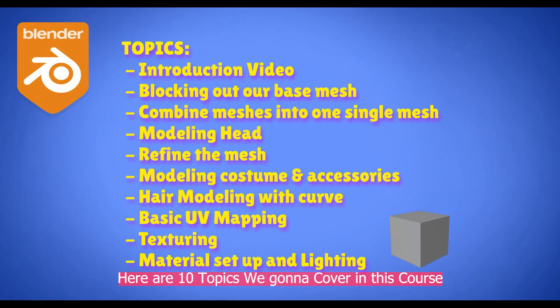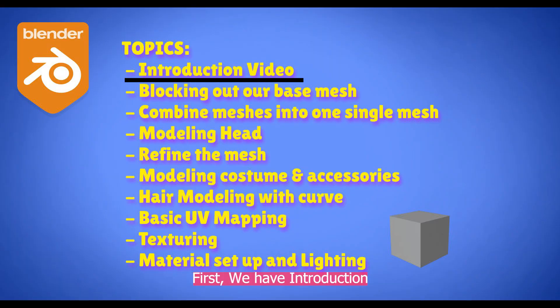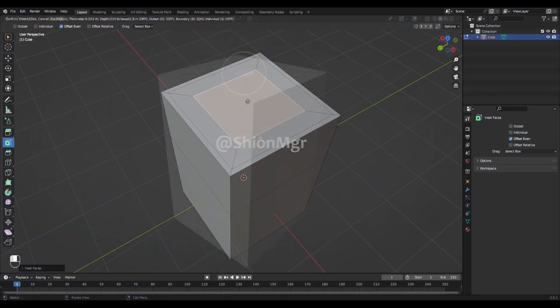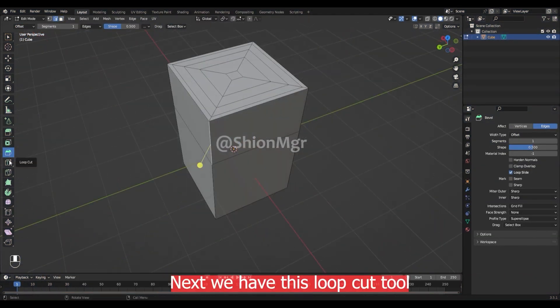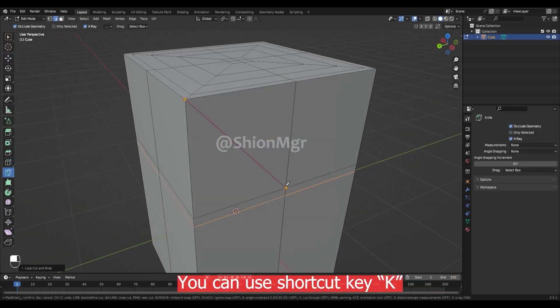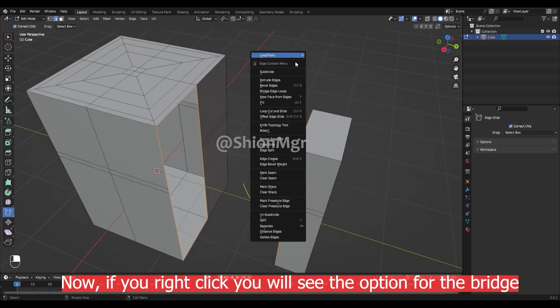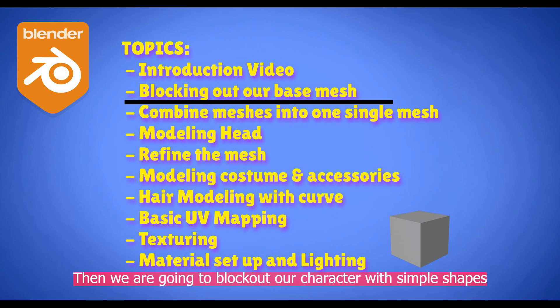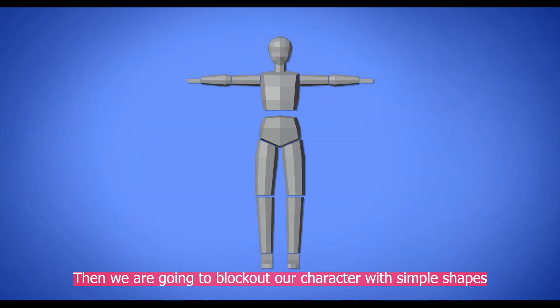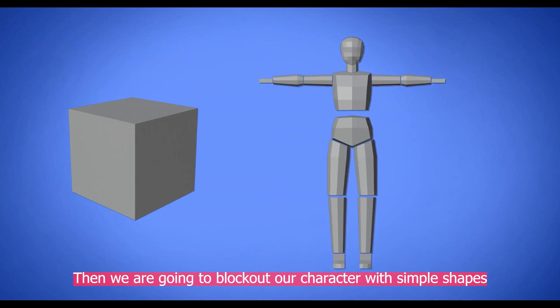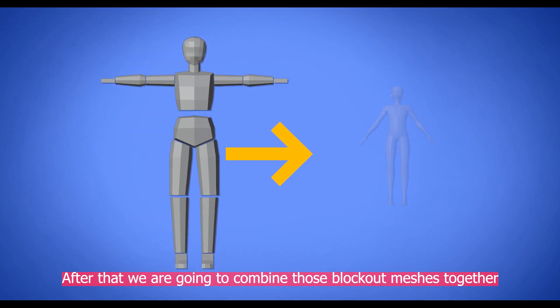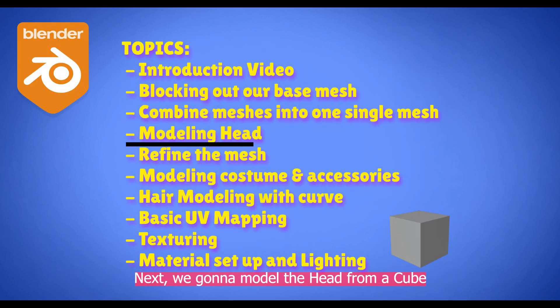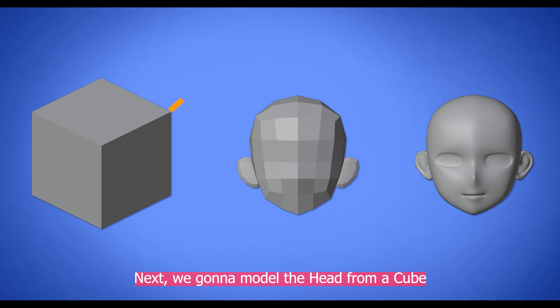Here are 10 topics we're going to cover in this course. First we have an introduction where I will show you the basic Blender tools that I use. We'll also see how to set up your reference image. Then we are going to block out our character with simple shapes. After that we are going to combine those block out meshes, and next we're going to model the head from a cube.